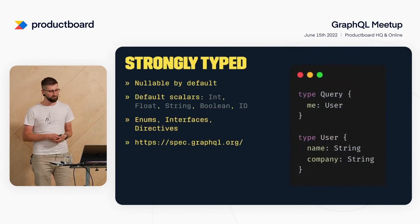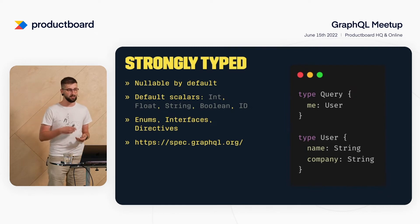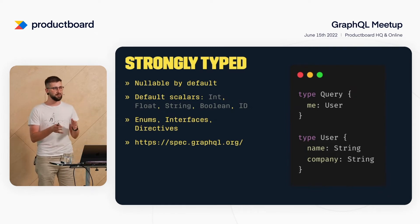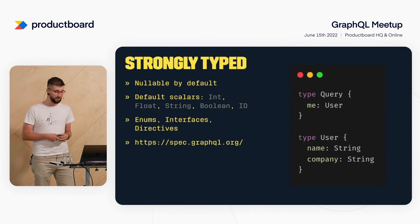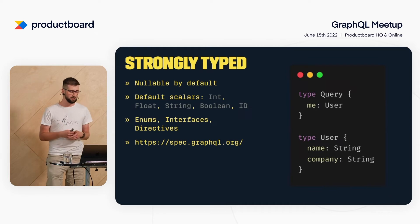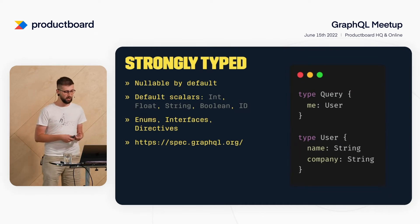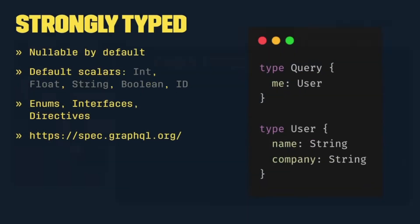Speaking about types, GraphQL is nullable by default, which is great behavior. There are default scalars: integer, float, string, boolean. It has support for enums, interfaces, and directives — basically, if you know decorators from Java, Kotlin, or TypeScript, it looks pretty much the same. The specification can be found on spec.graphql.org.